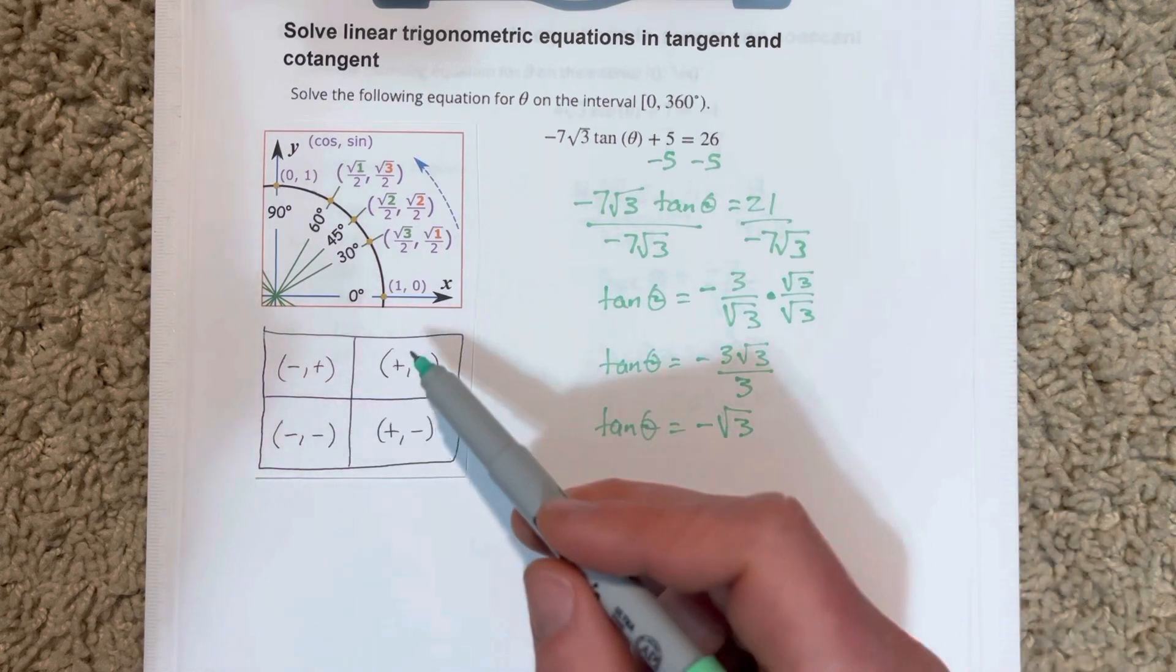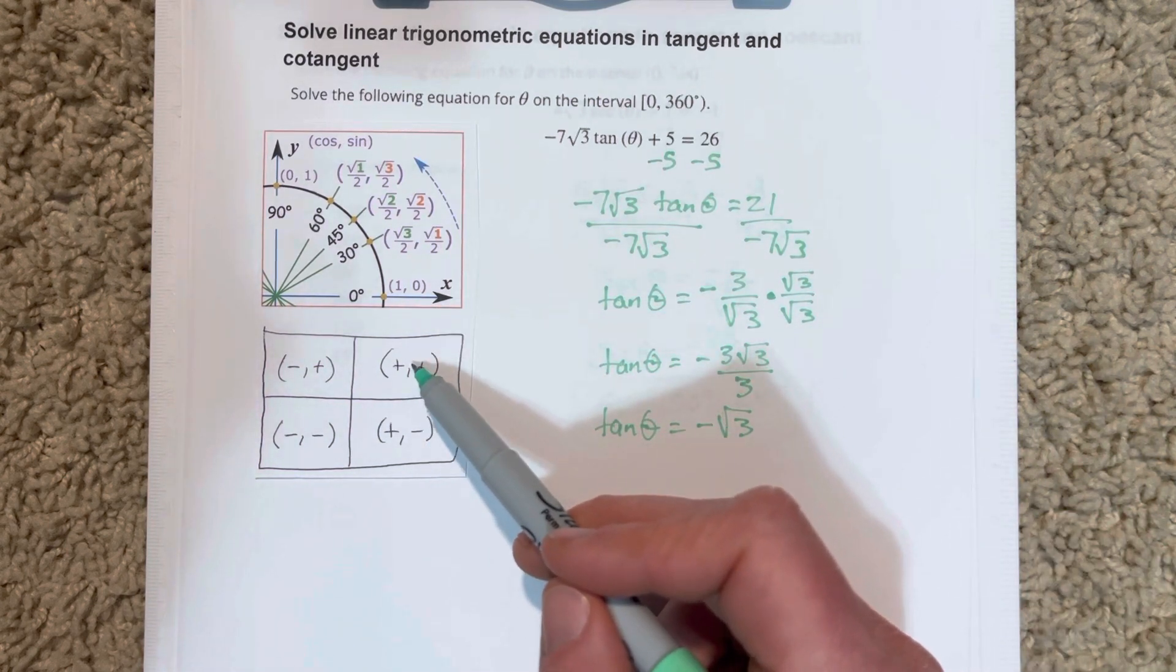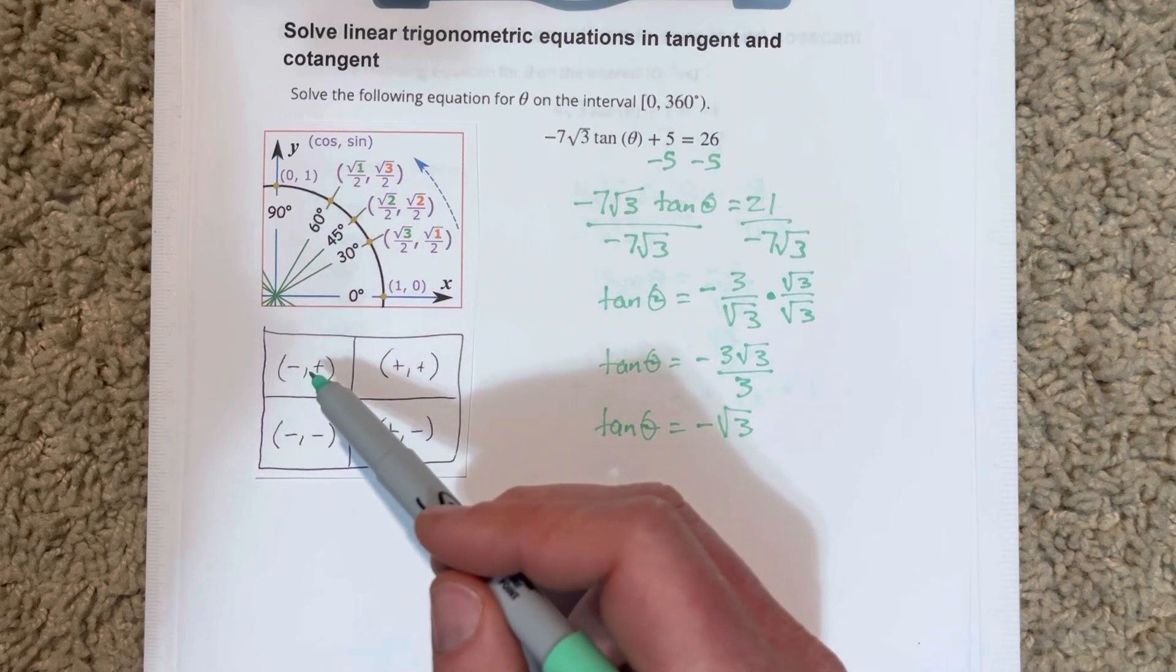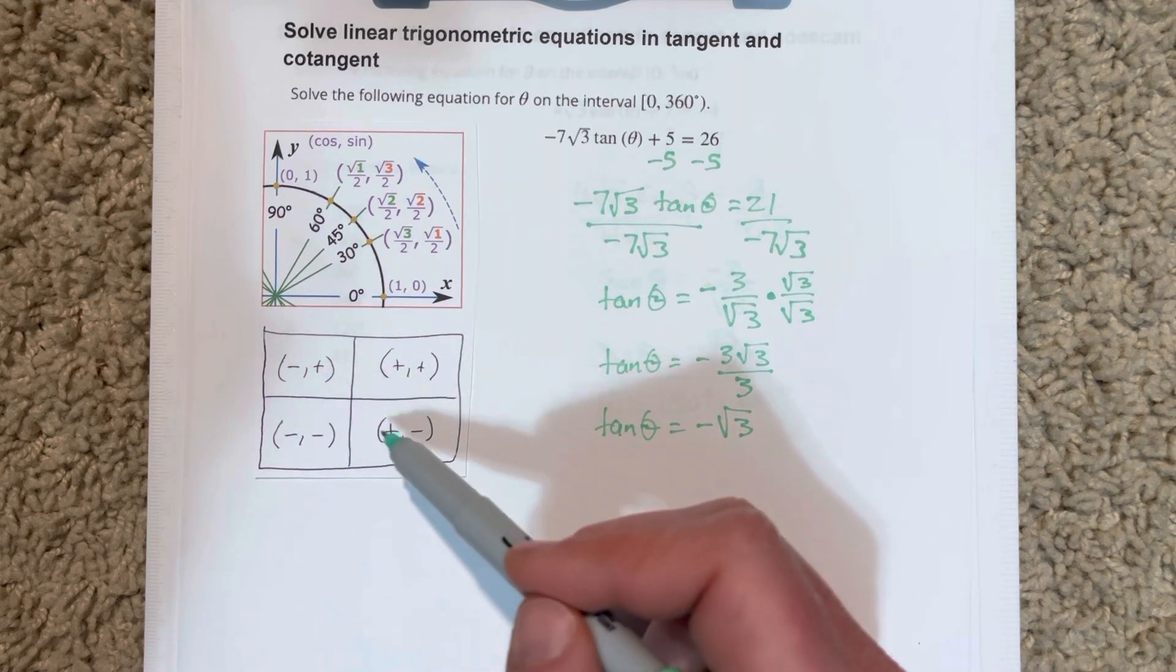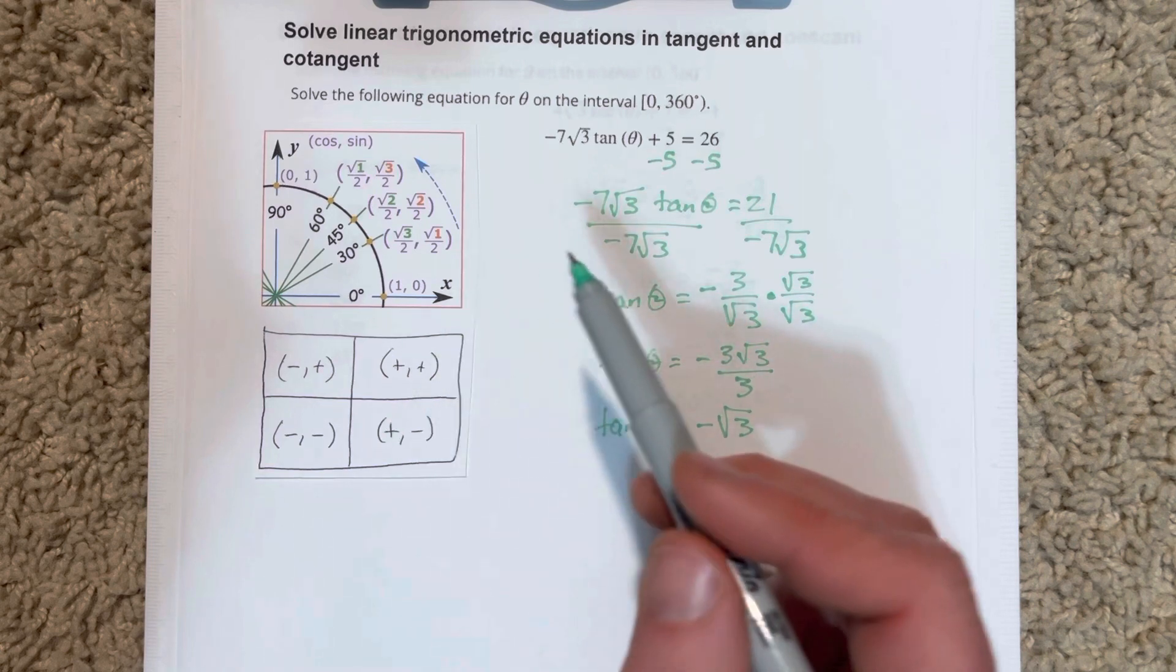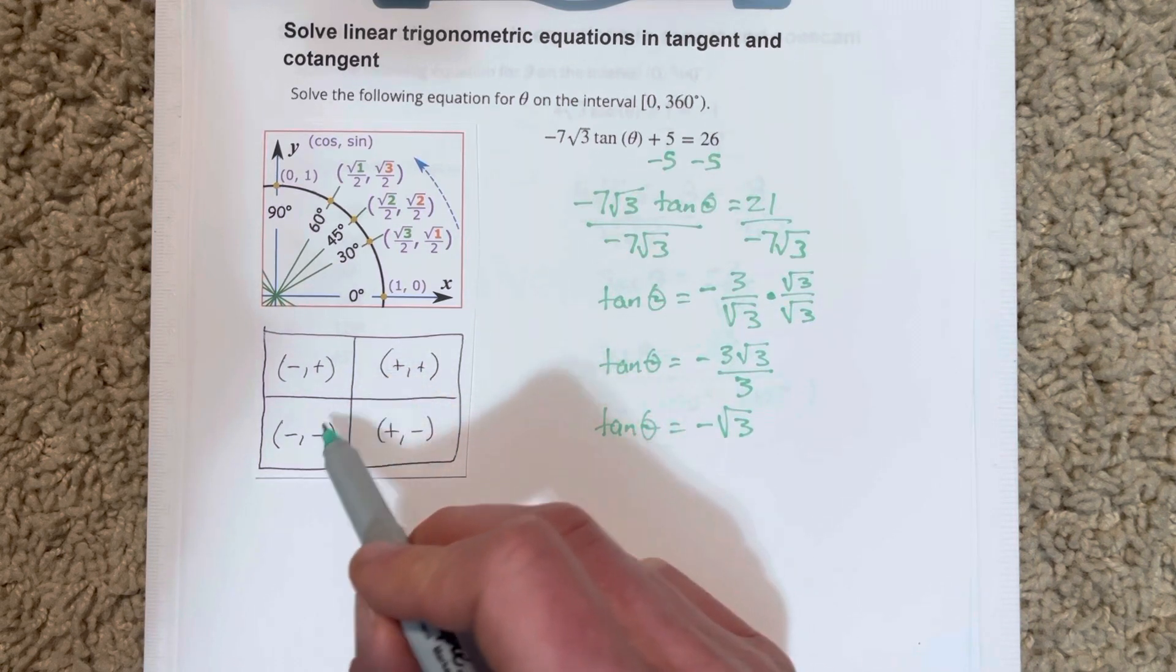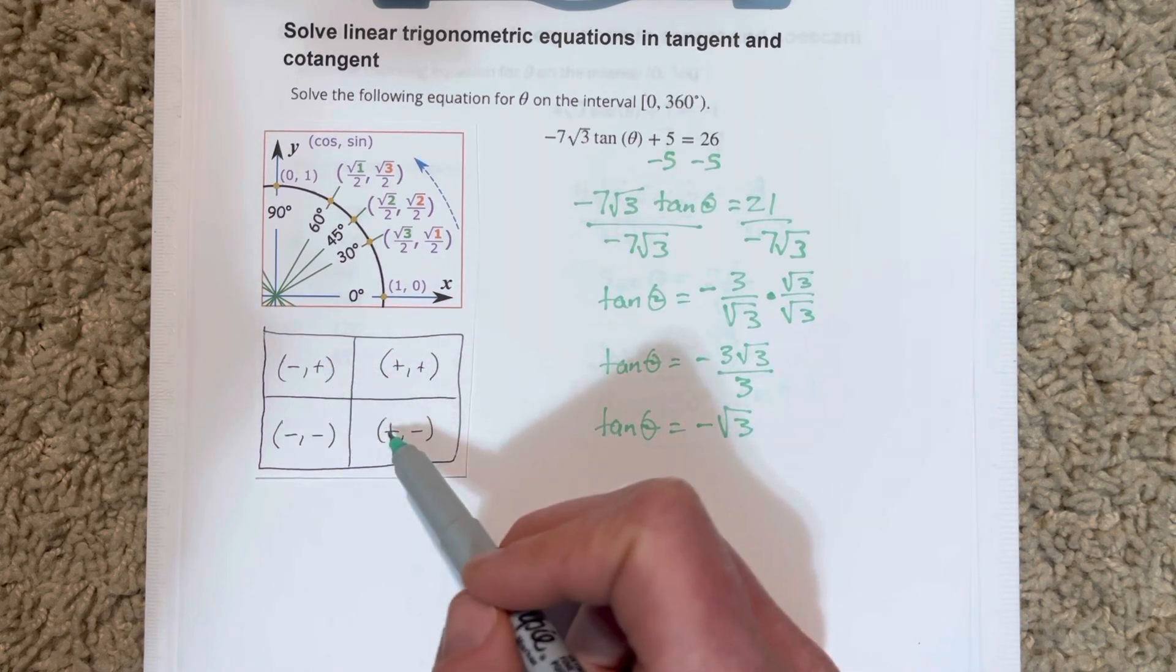Tangent is positive in quadrants 1 and 3, so we can't use 60 degrees from quadrant 1. We need to look at the quadrants where tangent is negative, which are quadrants 2 and 4.